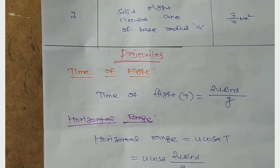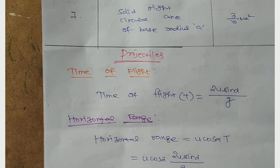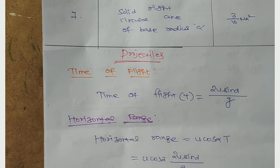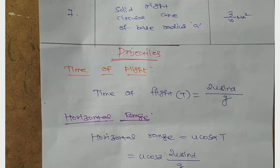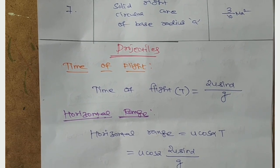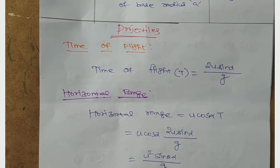Next, projectiles. First topic is time of flight. Time of flight is T, that is 2u sin α divided by g, gravitation.